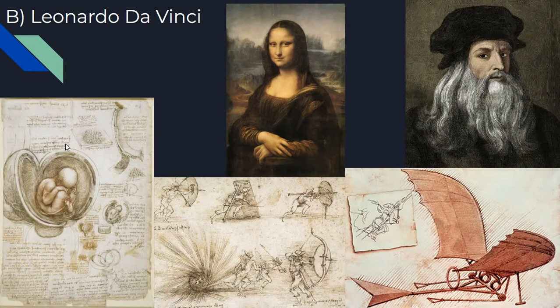Leonardo da Vinci was the quintessential Renaissance man. You probably know him from painting the Mona Lisa, but he was also an inventor, creating things like a flying machine, a bow and arrow that doubles as a shield, and some of the earliest prototypes for tanks. He also did scientific study and exploration, studying the human body, medicine, and a whole variety of different fields. He represents the ideals of the Renaissance because of the breadth of his studies and interests.